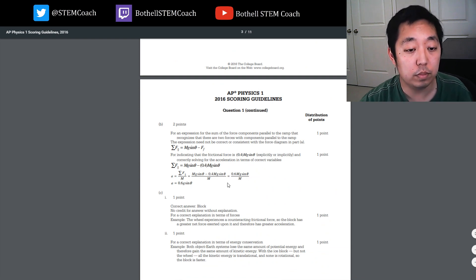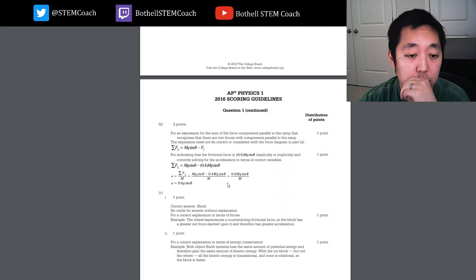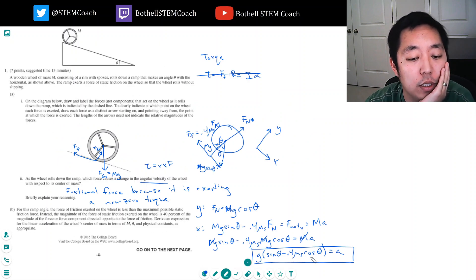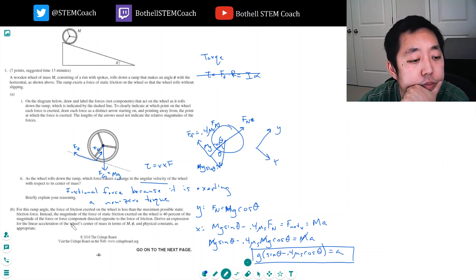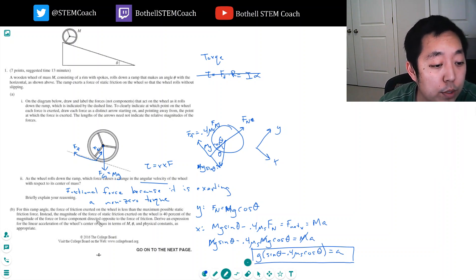Friction force is the only force that exerts a torque. For indicating the frictional force is 0.4 mg sine theta. Let me see. I messed that up. Because I put 4.4. Oh, I misread it. I said it's 40% of the magnitude of the force component directed opposite of the force of friction. What's directed opposite of the force of friction is 0.4 mg sine theta. I just misread. I didn't. I don't know why I read that too fast. So I got this part wrong.